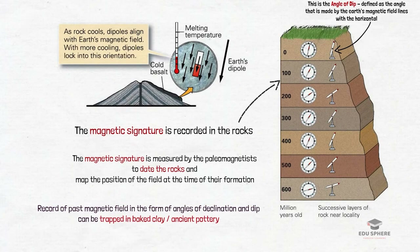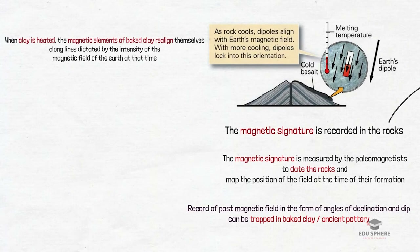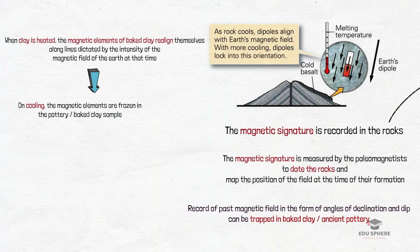Studies have shown that a record of past magnetic field in the form of angles of declination or dip can be trapped in baked clay or ancient pottery. When the clay is heated to a certain degree, the magnetic elements realign themselves along lines dictated by the intensity and character of the earth's magnetic field at that time. When the clay pottery is cooled down, the magnetic elements are frozen and can be recorded as long as the clay is preserved — this is called remanent magnetism.